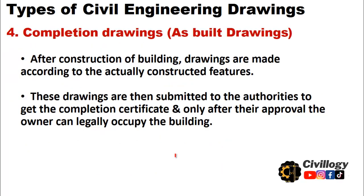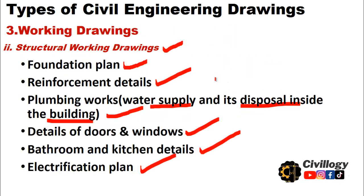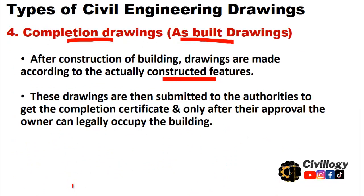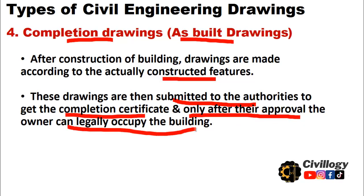The fourth type of civil engineering drawing is the completion drawing, also called as-built drawing. After construction of the building, drawings are made according to the actually constructed features — since small adjustments may have been made during construction, such as alterations in the position of doors, windows, or room sizes. These completion drawings are then submitted to the authorities to obtain a completion certificate.